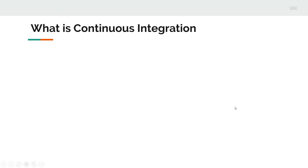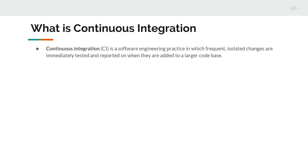What is continuous integration? If you go with the internet definition, continuous integration is a software engineering practice in which frequent isolated changes are immediately tested and reported on when they are added to a larger code base. Now let's cut this definition into parts and explain every bit of it with a real-time scenario.